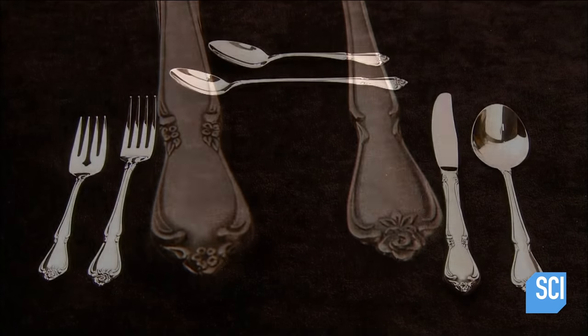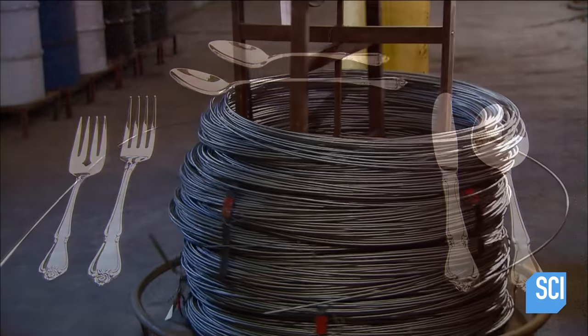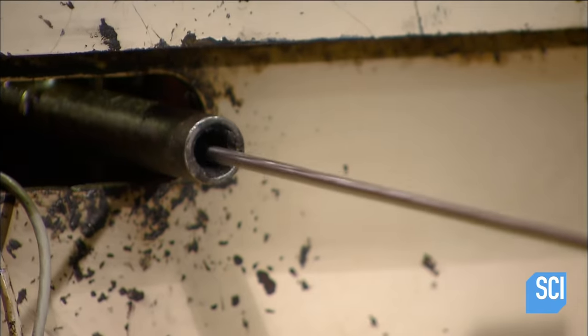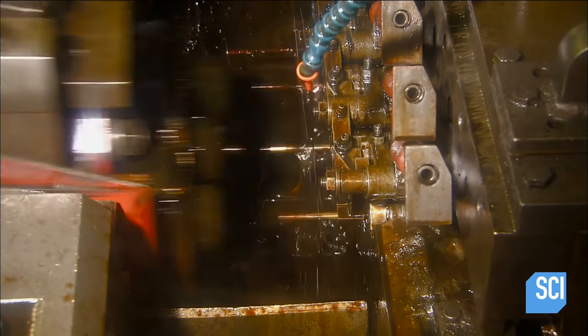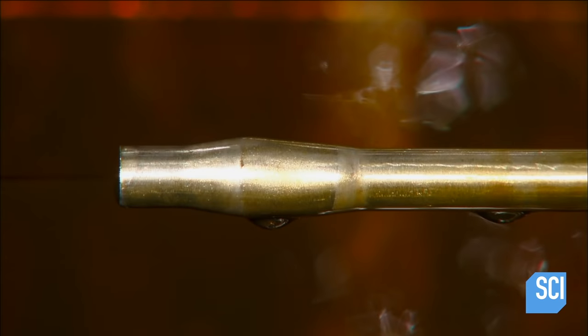It all begins with a thick coil of wire. To make knives, a heading machine cuts the coil into blank pieces with a head at one end. This head is called a bolster. It will connect the blade to the knife handle.